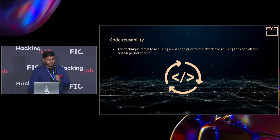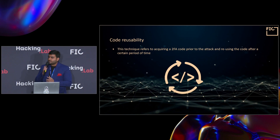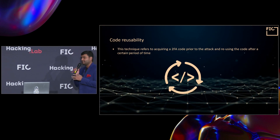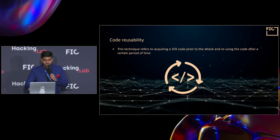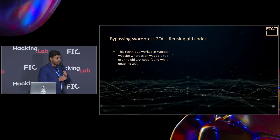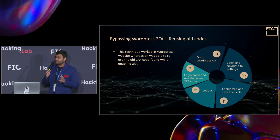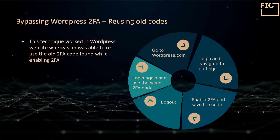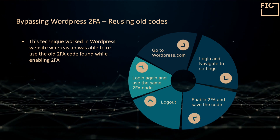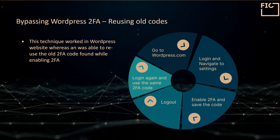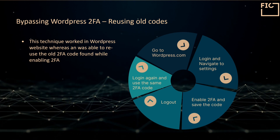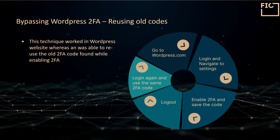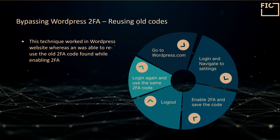Code reusability — you would be surprised how many web and mobile applications have this vulnerability, where you can simply reuse a code. This is a company called Automattic, which is a WordPress-owned company. We were able to bypass 2FA in Automattic using old 2FA codes. Over the course of 24 hours, there would be a number of codes that I would receive, and I could use any one of them to bypass the 2FA.